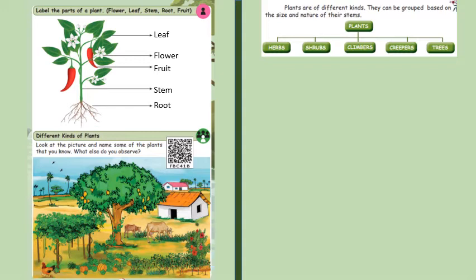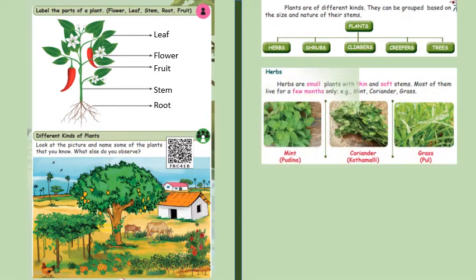Now plants are of different kinds, and they are grouped based on the size and nature of the stem. The important part of the plant is stem, and based on the stem we are dividing the plant into herbs, shrubs, climbers, creepers and trees.